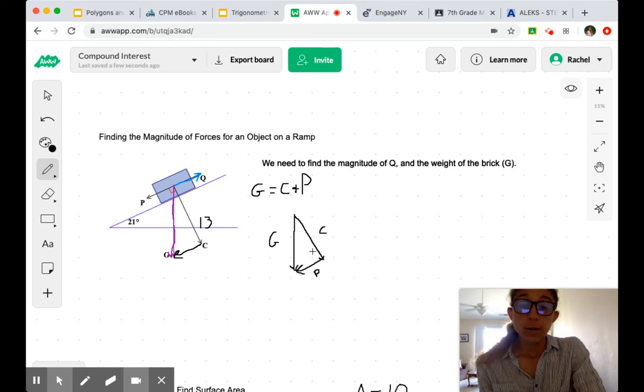Now we know that this is a right angle, and because we're told that this is 21 degrees, we can find the measure of this angle here. We know that it is also going to be 21 because of similar right triangles.